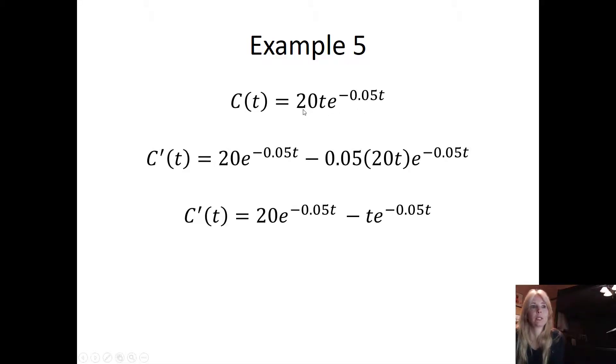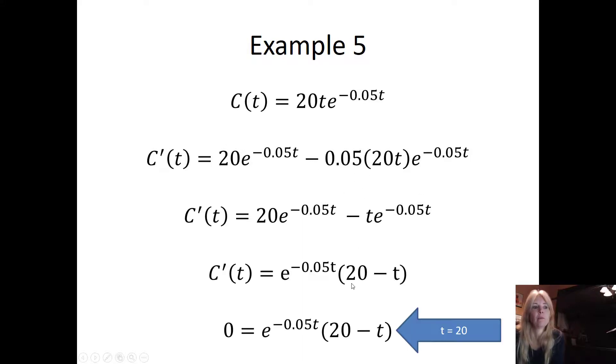The product rule says take the derivative of 20t, which is 20, leave this piece alone, minus leave the 20t alone, take the derivative of this piece, which is the chain rule where you bring the exponent down negative 0.05 and you leave this alone. I just multiplied all this stuff out. So this is my derivative. I factor out an e to the negative 0.05t, I set this equal to zero, and all I care is this piece right here. Do you know why? Why do I not set this piece equal to zero?